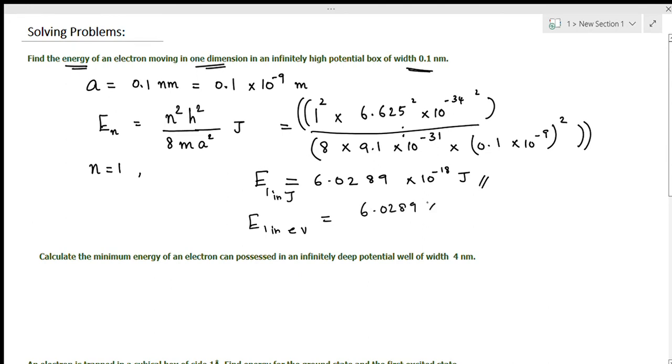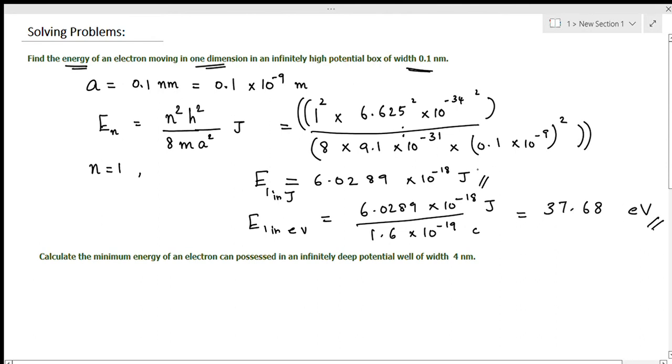Divide by 1.6 × 10⁻¹⁹ and you will get 37.68 electron volts. This is the value of the energy of an electron moving in a one-dimensional box.